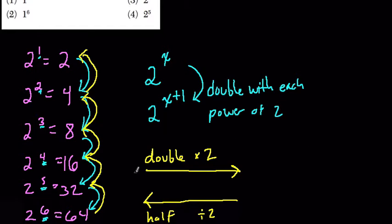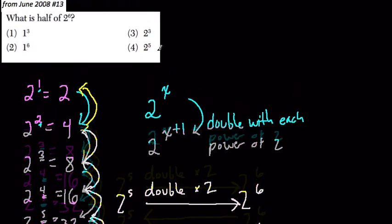So if we have, let's say, 2 to the 5th, and we double it, we get 2 to the 6th. But if we start at 2 to the 6th and we half it, we go back to 2 to the 5th. So here, the answer is 4.